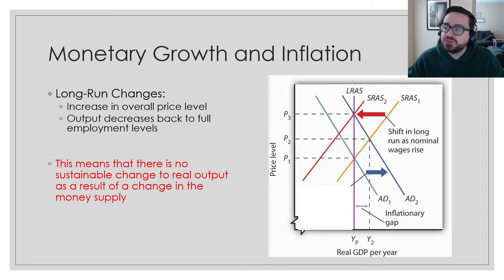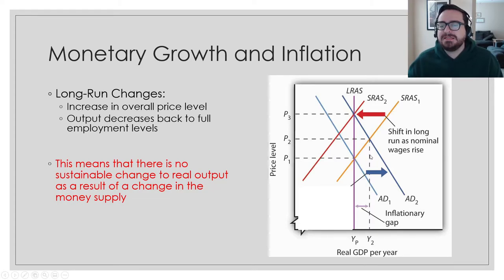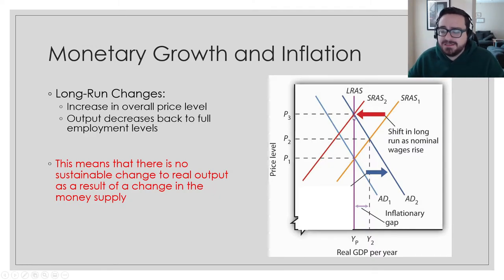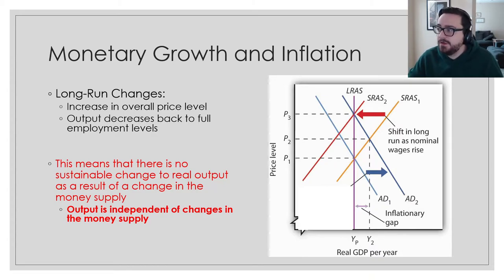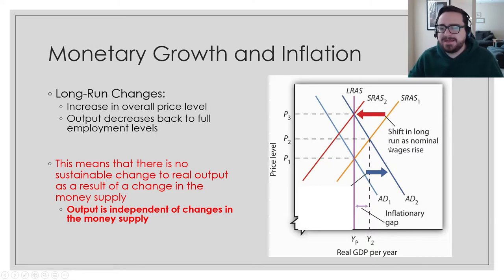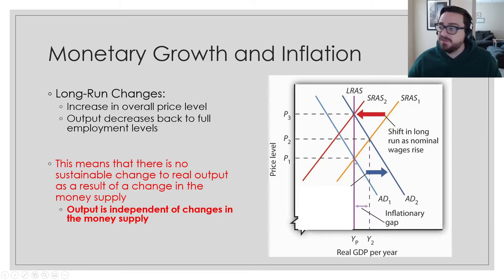Just putting more money out into the economy doesn't magically make the economy grow. It doesn't make us produce more — it just makes prices go up. It might trick you into believing we're producing more because we do produce more for a window of time, but eventually things in the economy counter-cyclically undo themselves. So output is independent of changes in the money supply. That means the Federal Reserve can't just make our economy grow — they can try to fix problems like recessions, but they can't directly improve long-term productivity.